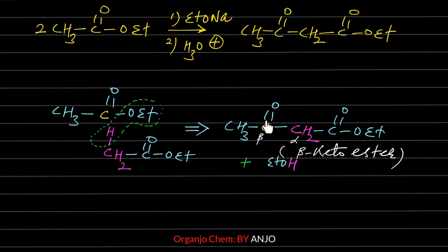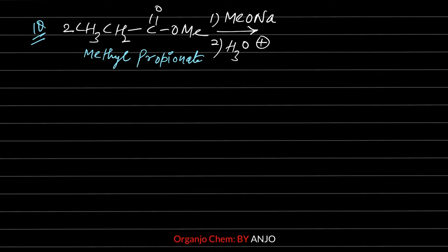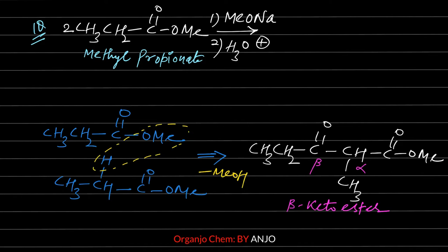Question 1: Methyl propionate is given. Since the leaving group is OMe, sodium methoxide is used. Pause the video and use the trick to draw the Claisen condensation product. Answer: Arrange both ester molecules so one releases its OMe group and the other releases one alpha hydrogen from the adjacent carbon. Remove methanol as a side product and form a new C–C bond, giving the beta-keto ester as the final major product.